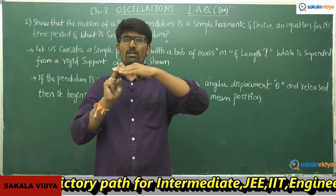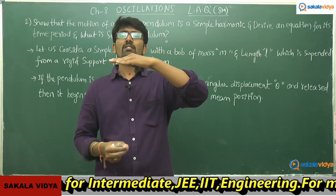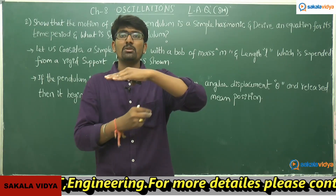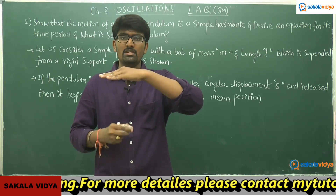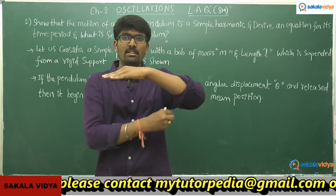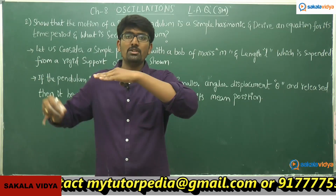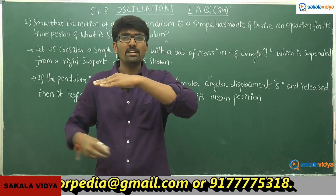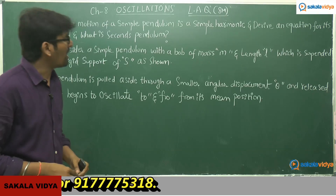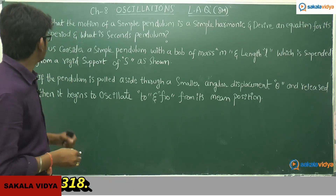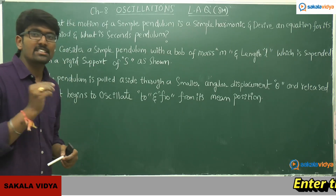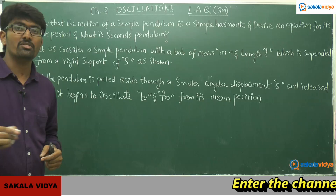Consider a fixed end or rigid support S, from which a string is connected to a bob of mass M. If the pendulum is pulled aside through a small angular displacement theta and released, it begins to oscillate in to and fro motion from its mean position.